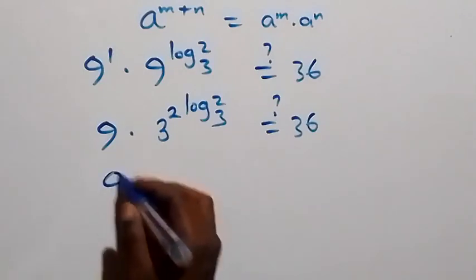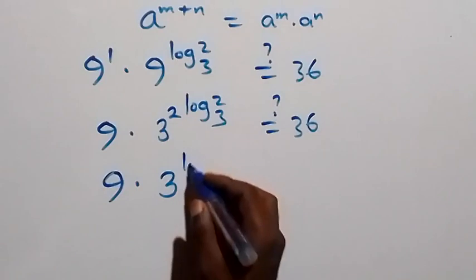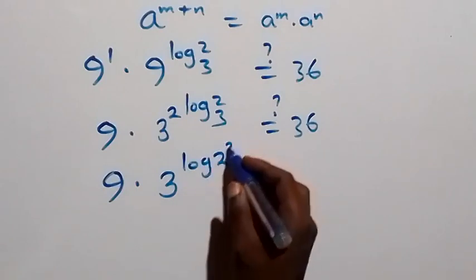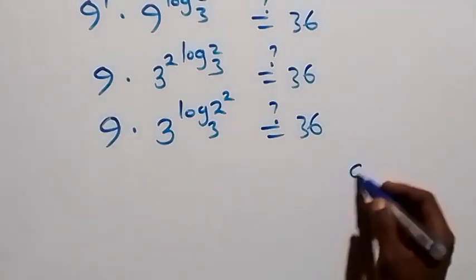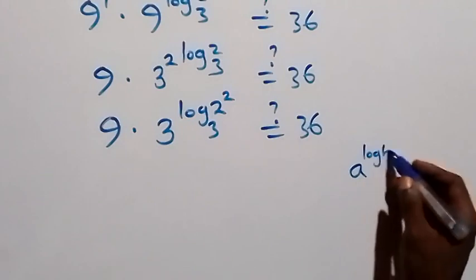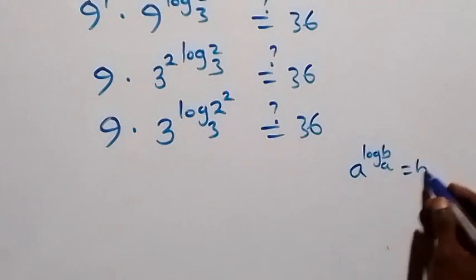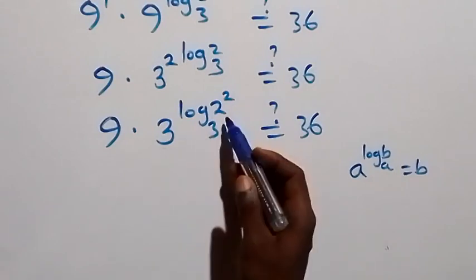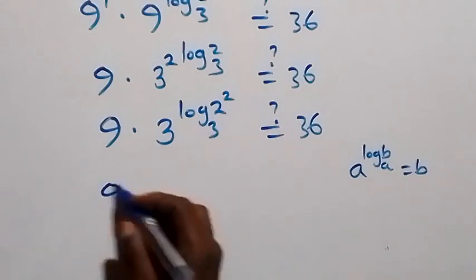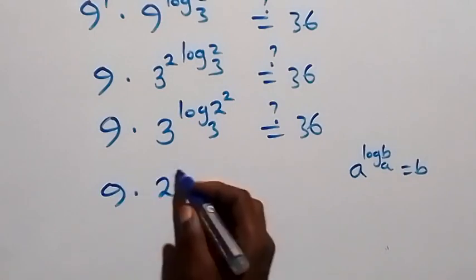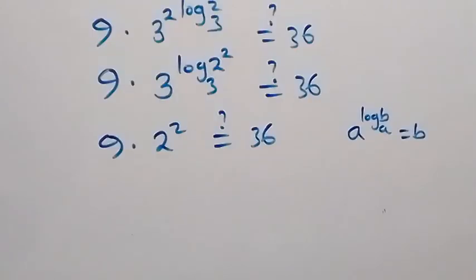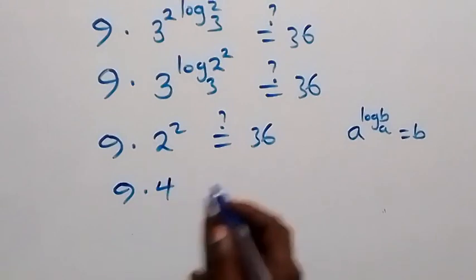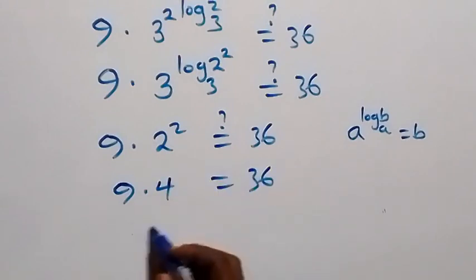We have 9 times 3 raised to power log 2 squared to base 3 equals 36. From the law of logarithms, a raised to power log b to base a equals b. So this gives us 2 raised to power 2, meaning 9 times 2 squared equals 36, which is 9 times 4 equals 36.